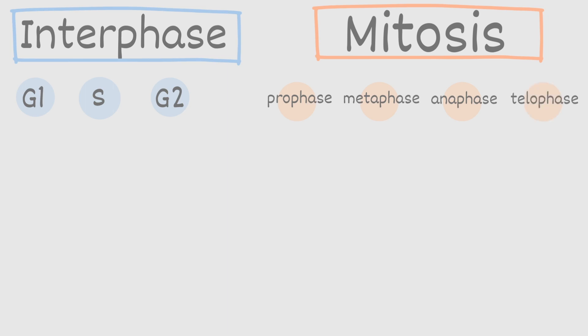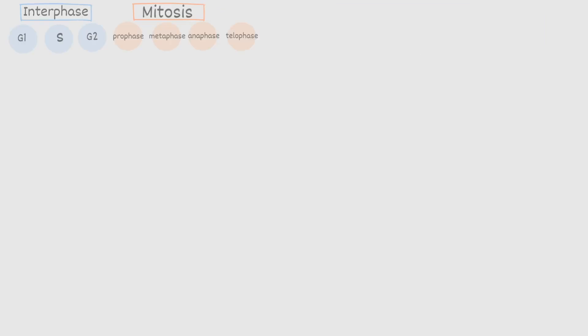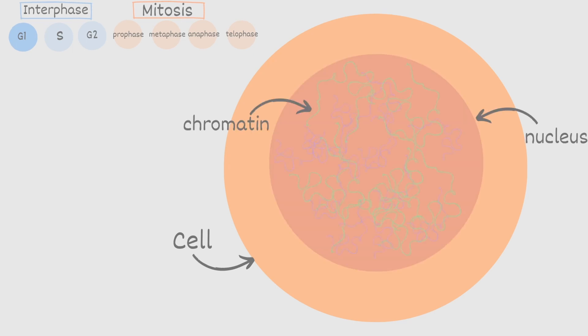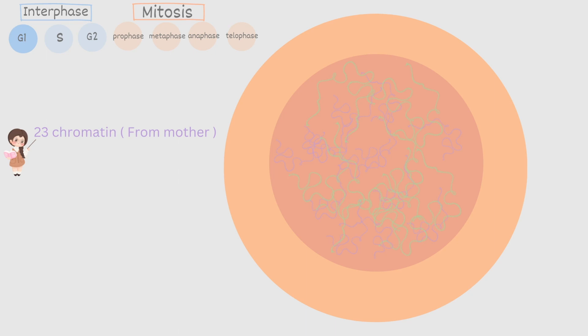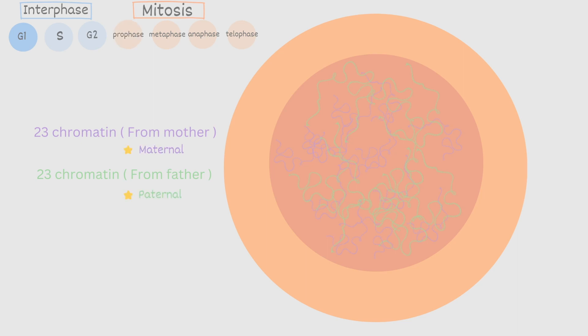So let's go ahead and start off with G1 in the interphase. This is where all cells begin. So this is our cell. Inside we have our nucleus and inside the nucleus we have our chromatin. Remember chromatin is a piece of DNA. At this point this parent cell starts off with 23 chromatin from the mother and 23 chromatin from the father. The mother's genetic material is referred to as maternal and the father's genetic material is referred to as paternal.